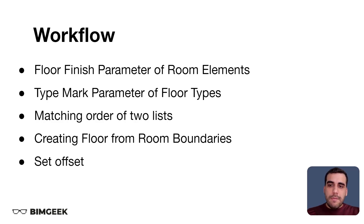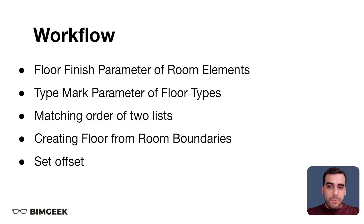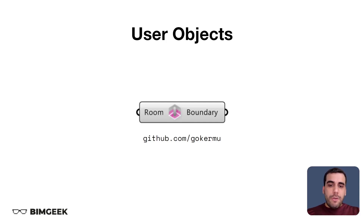The workflow we're going to follow is quite simple. First, we're going to read the floor finish parameter of room elements. Then we're going to read the type mark parameter value of floor types and match the order of these two lists. Finally, we're going to create our floors from room boundaries and set their offset value so they don't intersect with the structural floor.